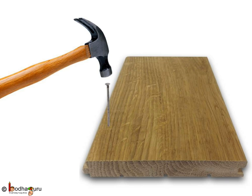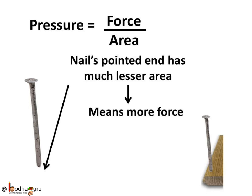So we applied almost the same force both times. But the first time the nail didn't go through, and the second time we were successful. What made this difference? If you observe, the head of the nail has more area than the tip, which is pointed. We were using the same force, but when we try to put the nail in by the pointed end, we were applying more pressure.